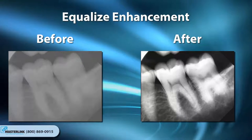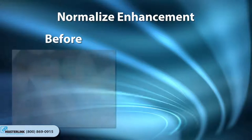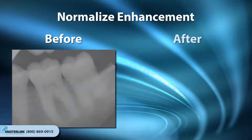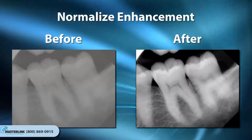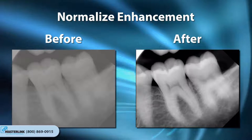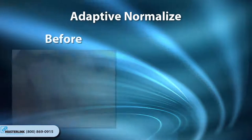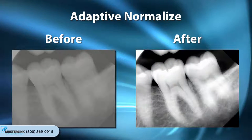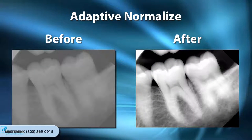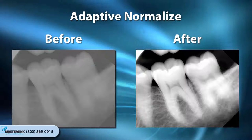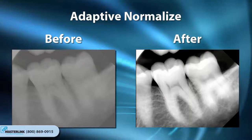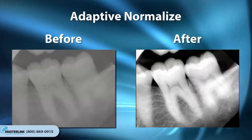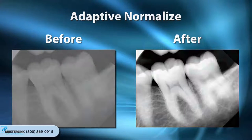The Equalize option is only available for grayscale images. The Normalize Enhancement increases the contrast in an image by stretching the range of image intensities to cover the entire range of intensity values. The Normalize option is only available for grayscale images. The Adaptive Normalize operation usually results in the best brightness contrast for an image, using adaptive algorithms to determine the best application of the Normalize algorithm. When adjusting brightness contrast, Adaptive Normalize is the recommended first attempt.